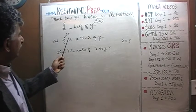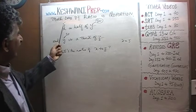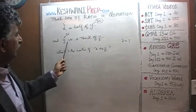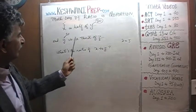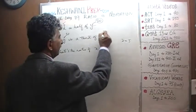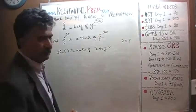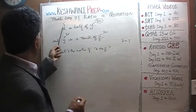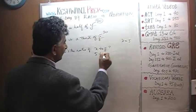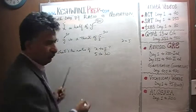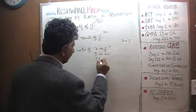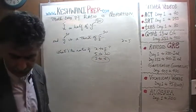So y is ten. X is half of y, so x is five. And we are told that y is a third of z. If y is a third of z and y is ten, then z would have to be thirty — that's the only way it's going to be a third of z. That's it, we are done. X is five and z is thirty, so it's five to thirty, which we have to reduce — that boils down to one to six. One to six is the answer.